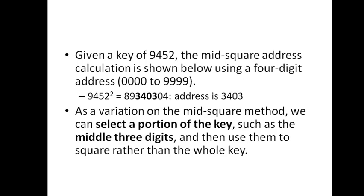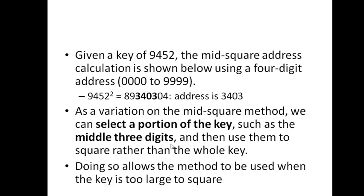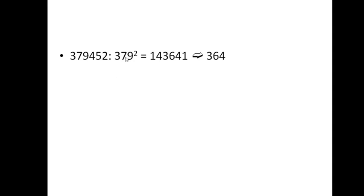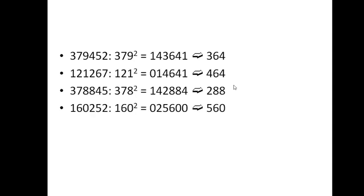A variation of the mid-square method: instead of squaring the entire key, square only a portion of it. For example, take only the first three digits of 379452, find their square, then extract the middle three digits — yielding 364 as the address. The same logic applies consistently across all keys.